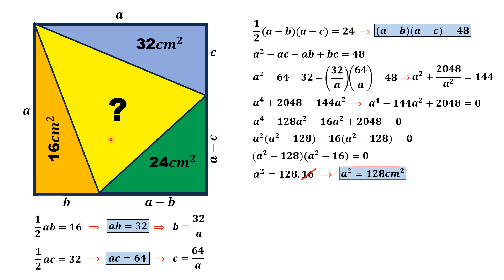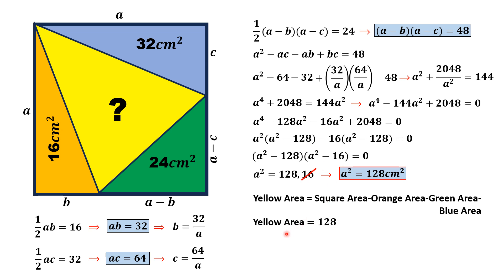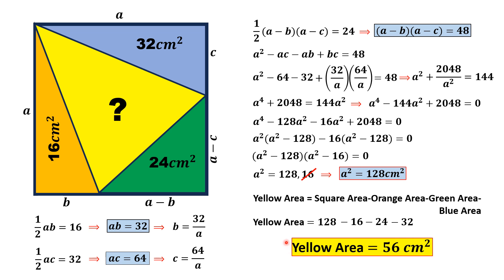Thus the area of the whole square is 128 cm². The area of the yellow region equals the area of the whole square minus the orange area minus the green area minus the blue area: 128 minus 16 minus 24 minus 32, giving a final answer of 56 cm². If you are new to my channel, please subscribe and give a thumbs up. Thank you for watching.